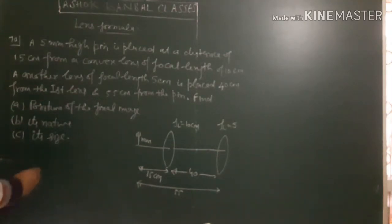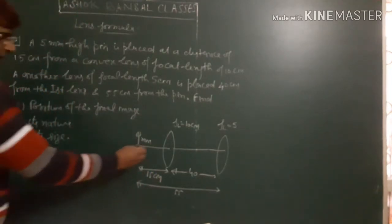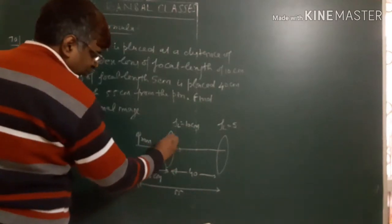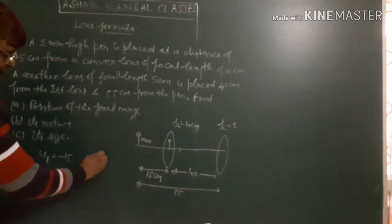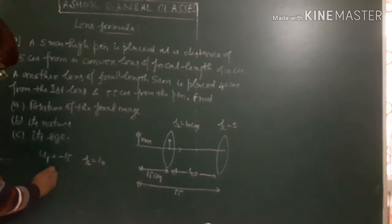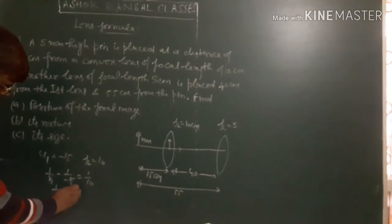So for the first lens, u1 equals -15cm. Using the lens formula: 1/v1 minus 1/u1 equals 1/f1. Substituting: 1/v1 equals 1/10 plus 1/15.